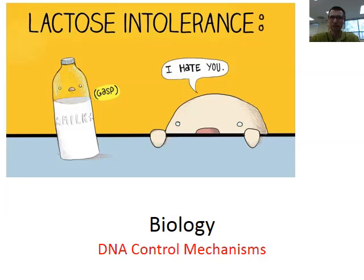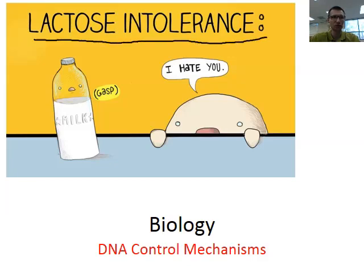However, as adults, this gene is turned off, and that's partially why a lot of adult humans — which are mammals — are lactose intolerant, because the gene that should create the enzyme lactase is turned off. Today we're going to examine how different types of organisms control when and how proteins are generated from a DNA sequence.